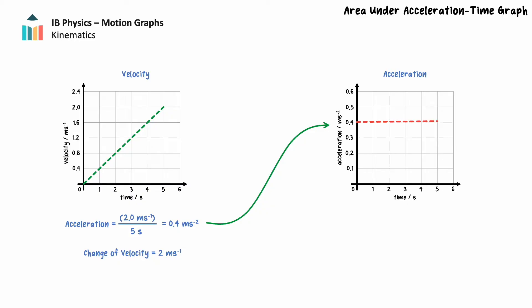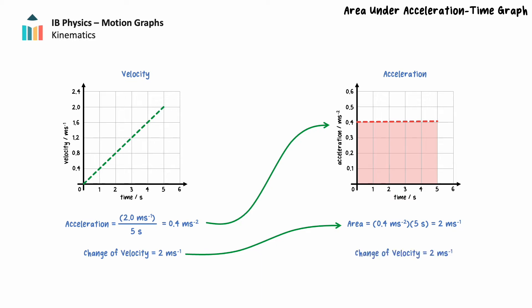We can read the change in velocity from the velocity-time graph. For the motion depicted, the object's change in velocity is 2 meters per second. The change in velocity can also be determined from an acceleration-time graph — this is the area bounded by the graph and the time axis. From the acceleration-time graph, the area is equal to 0.4 meters per second squared multiplied by 5 seconds, which is 2 meters per second. This change in velocity is the same as was read from the velocity-time graph.